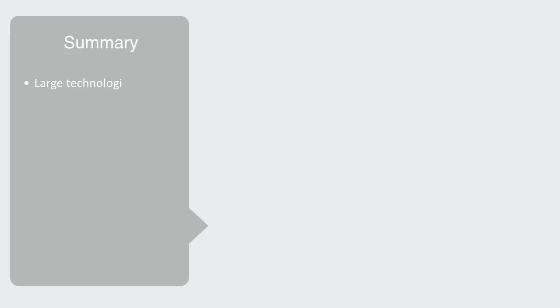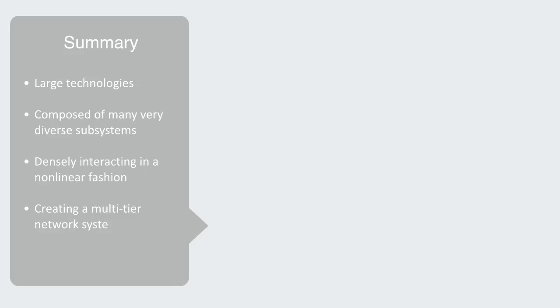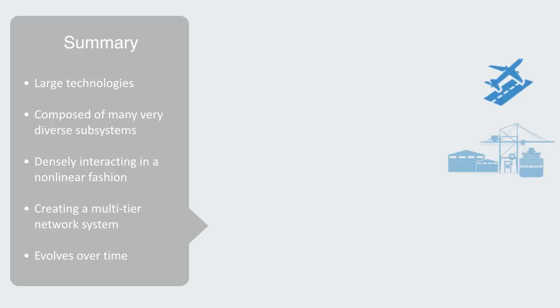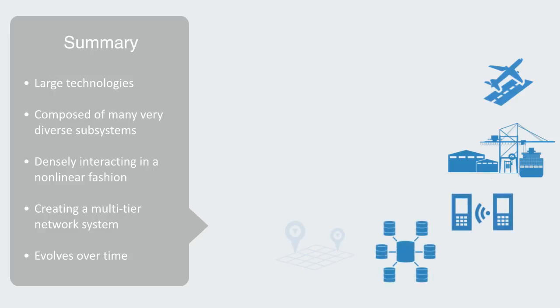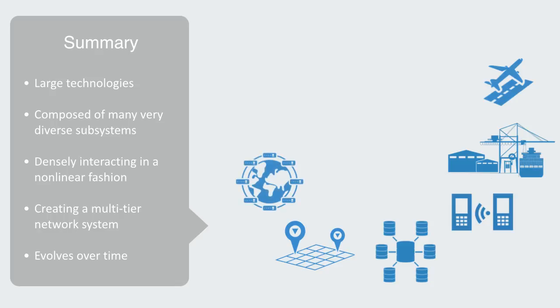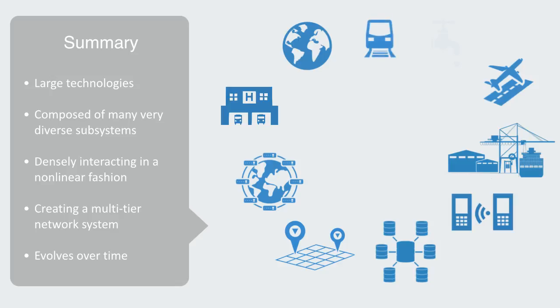So this is an outline to what we mean when we use the term complex engineered system. There are large technologies composed of many diverse subsystems that are densely interacting in a non-linear fashion to create a multi-tiered network system that evolves over time. To give some other examples, we could cite airports, logistics networks, telecommunications networks, enterprise information systems, IoT platforms and the internet itself, hospitals and healthcare systems, the global air transportation network, and all types of infrastructure systems from mass transit to water supplies.